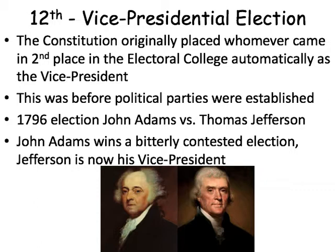The 1796 presidential election was a very contentious presidential election. Adams and Jefferson, who were friends, just threw verbal bombs at one another — it was a really brutal campaign. And now Adams, the vice president, wins the election as the successor to Washington, and he now has to have Thomas Jefferson — the guy who just campaigned against him — as his vice president.